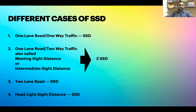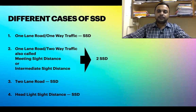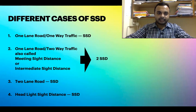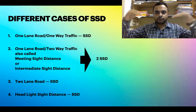There are different cases of sight distance depending on road type and traffic direction. For a one-lane road with one-way traffic, the required sight distance is simply one SSD — that calculated distance must always be visible to the driver. For a one-lane road with two-way traffic, also called meeting sight distance or intermediate sight distance, vehicles come from both directions.